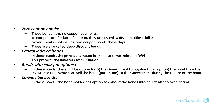Then there are bonds with call and put options. In these bonds, one option is that the government can buy back the bond even before the maturity period — that is the call option. The second option is that the investor can sell the bond back to the government during the tenure of the bond — that is the put option. We have come across call and put options earlier when discussing derivatives under risk management. The same concept applies here to bonds.